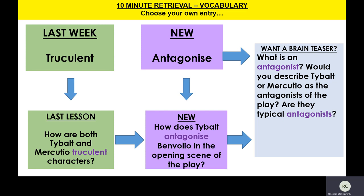Last week we looked at Tybalt as a truculent character. Can you remember what truculent means? And can you please answer the following question: how are both Tybalt and Mercutio truculent characters? Remember, Mercutio is Romeo's best friend, who is not a Montague or a Capulet. He is a relative of the prince, but he chooses to align himself very much with Romeo and seems to very much dislike Tybalt. So the cover teacher can just pause the video and give you a minute to answer that question.